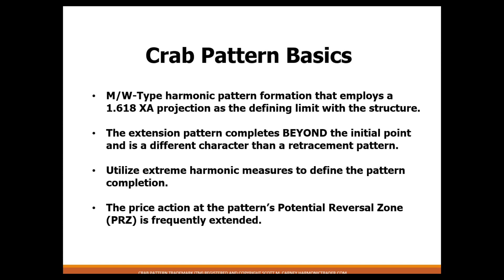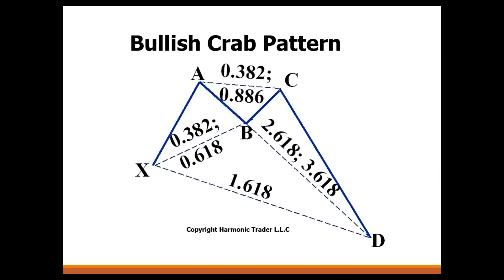When we look to trade the pattern, we're actually going to look for price action to exceed this point — it's an absolutely different character than a retracement pattern. We look to utilize extreme harmonic measures as these complement the 1.618 primary extension. We're looking at the price action at the pattern's potential reversal zone, which becomes frequently extended beyond our measured area, but only briefly. On the bullish crab pattern illustration, the XA leg is a 1.618 extension: if X to A is 10 points, we multiply by 1.618 and project down 16.18 points.